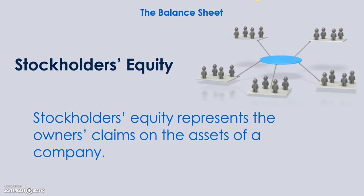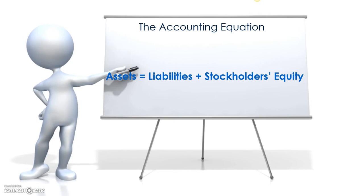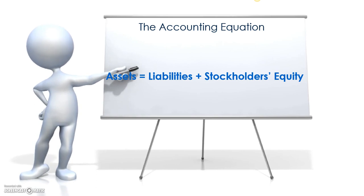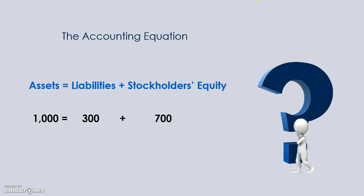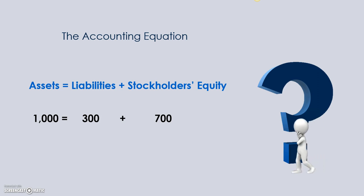Stockholders' equity is probably the hardest to understand. Equity represents the owners' claims on the assets of a company. To understand stockholders' equity, you really need to understand the basic accounting equation, which is: Assets = Liabilities + Stockholders' Equity. All three components are listed here in equation form. One of the most critical points is that every time you record a transaction, this accounting equation must hold true. If you impact one side of the equation, you must also impact the other side.